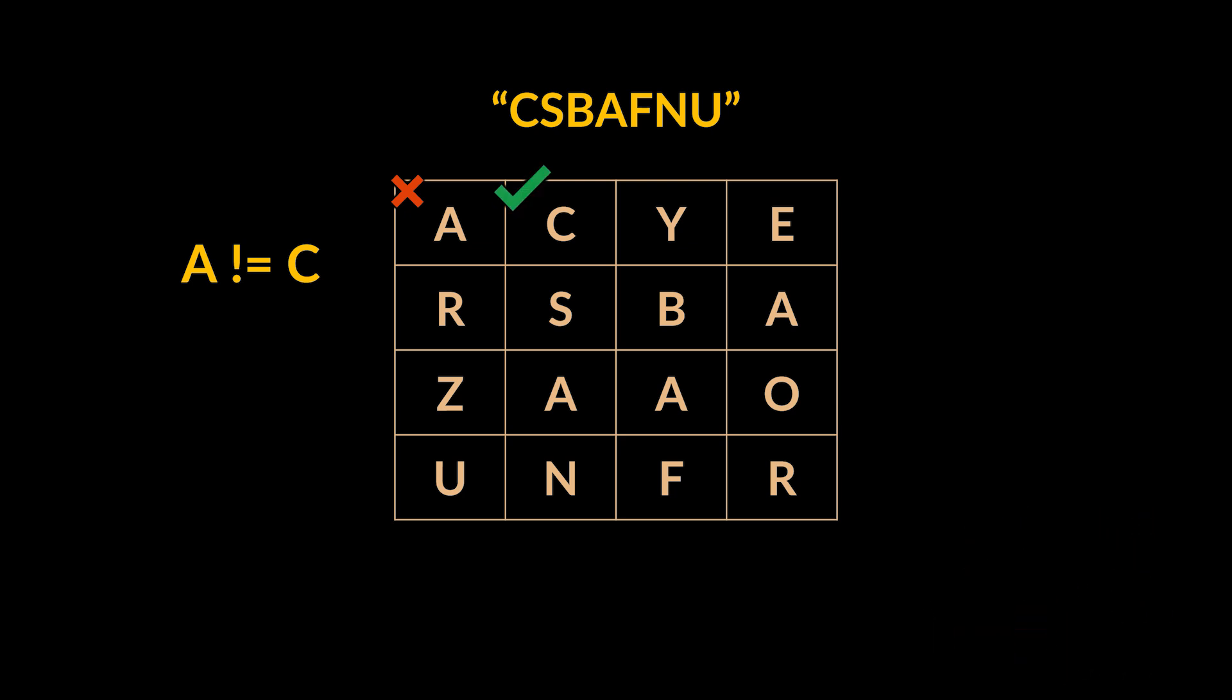The next cell with the letter C matches the target word, hence we will have to explore the different directions spanning from that cell. The letter A does not match the second letter of the word so we backtrack to the letter C. The same applies to the letter Y so we backtrack again to the letter C.